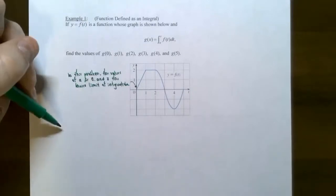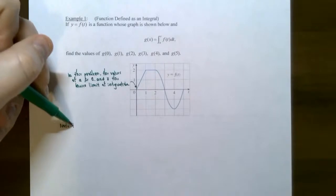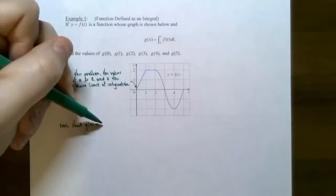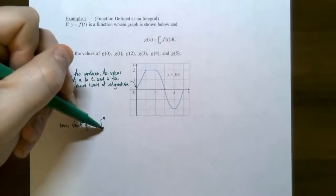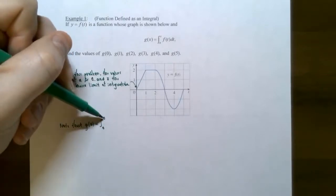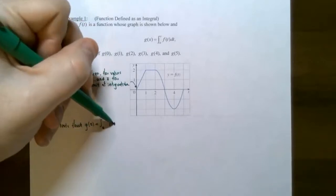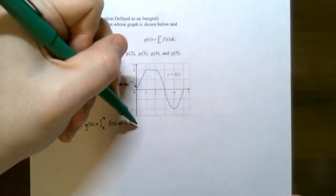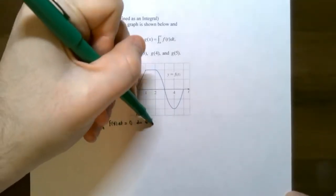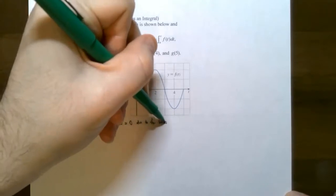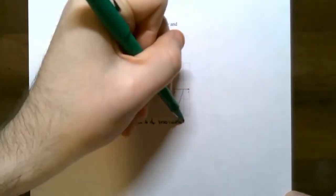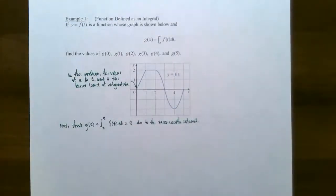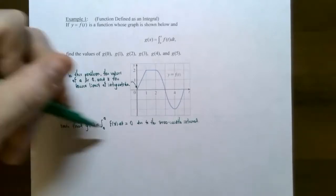Let's find these values of g. g of zero is the definite integral from zero to zero of f of t dt. This equals zero because of the zero-width interval — a property we discussed when we covered definite integrals. So g of zero is zero.